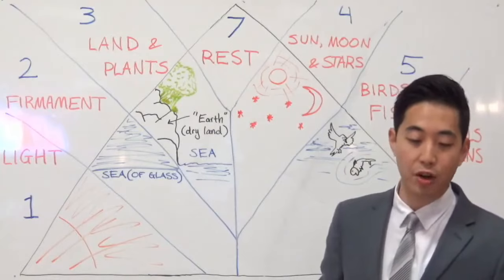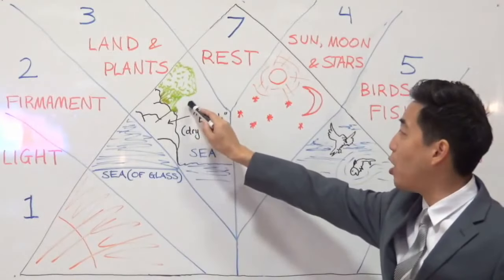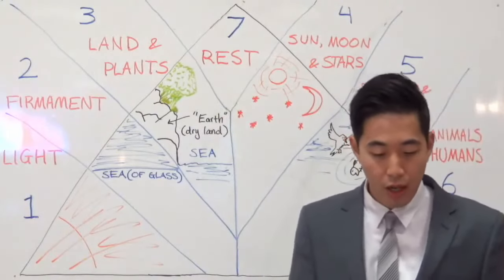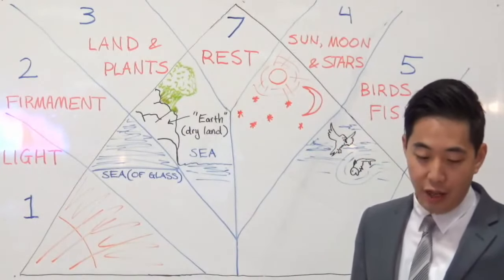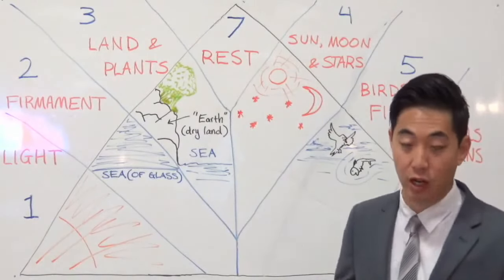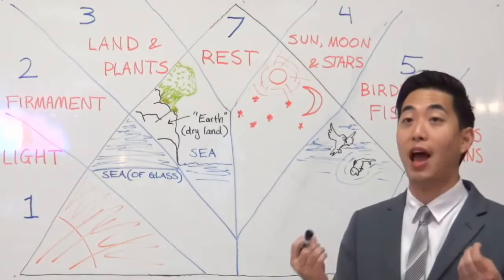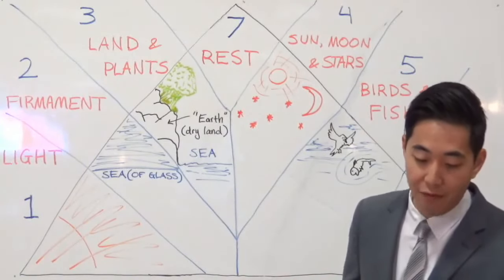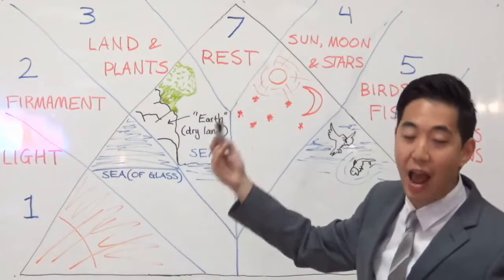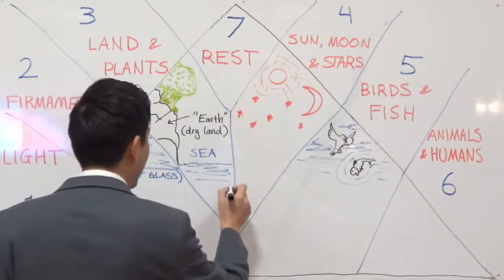Verse 11: And God said, let the earth bring forth grass. So we have vegetation here — trees, plants — on the same day. The herb yielding seed and the fruit tree yielding fruit after his kind, whose seed is in itself. Every herb yields seed, and the fruit tree yields fruit after his kind. Notice it says 'after his kind' — that's an important phrase.